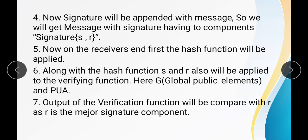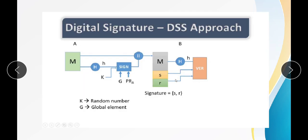At the receiver's end, in step five, the hash function is applied. In step six, along with the hash function, S and R are also applied to the verification function. Here, G — the global public element — and PUA, the public key, are used. The output of the verification function is then compared with R, as R is the major signature component. If both R values match, the message is verified.